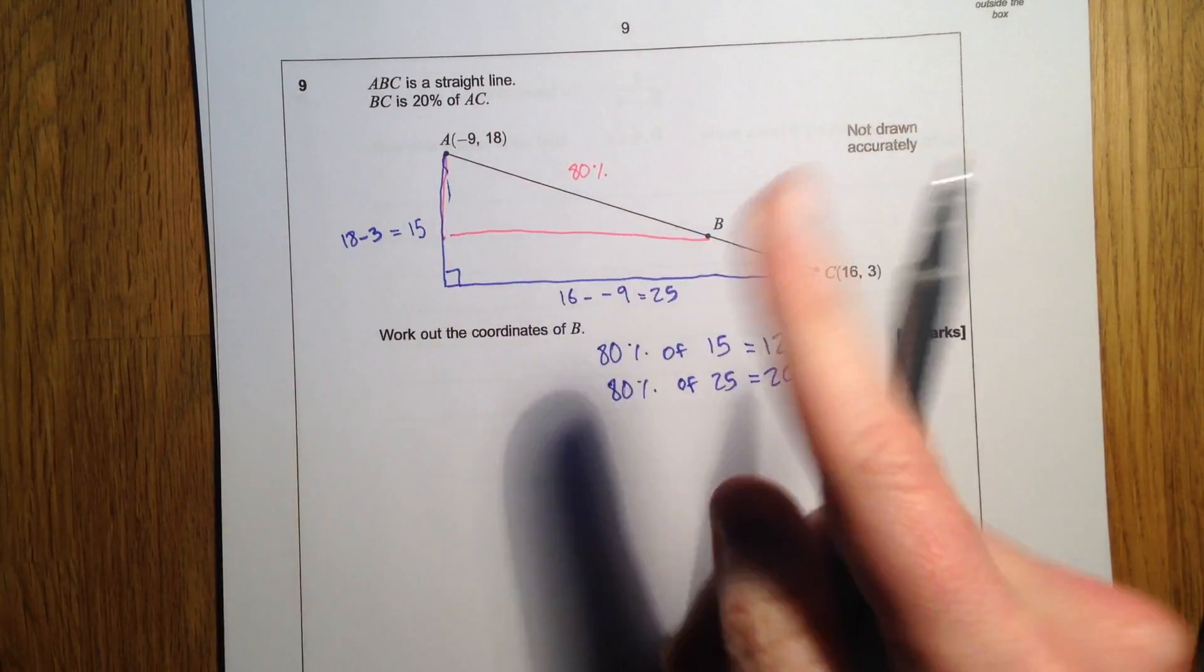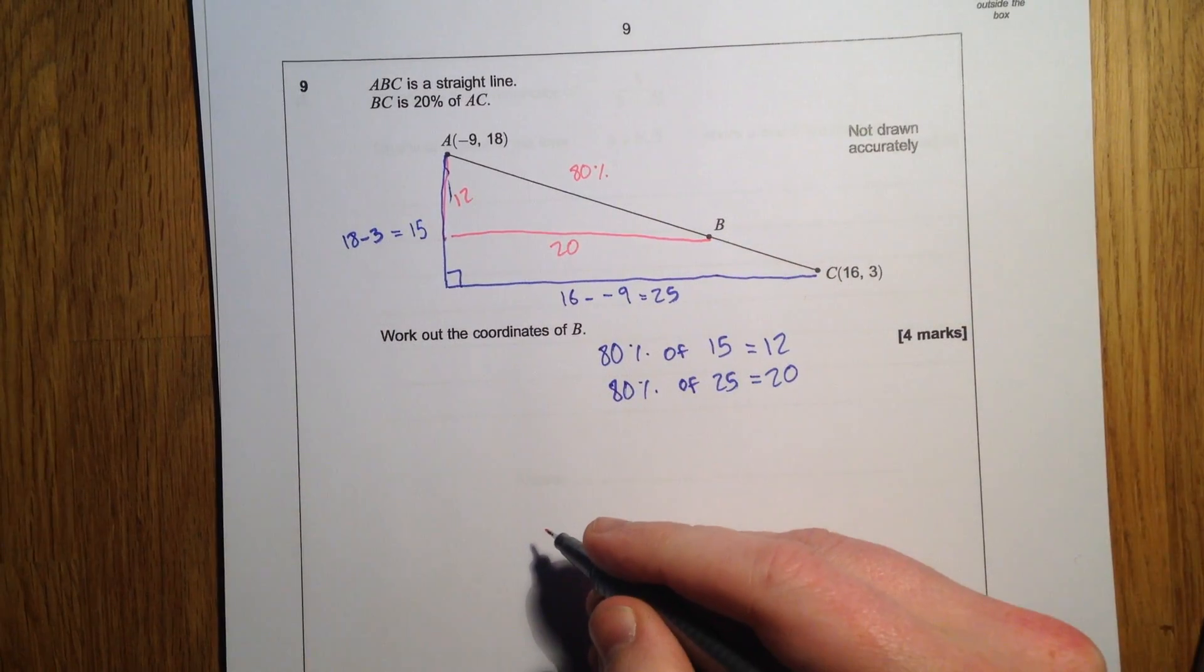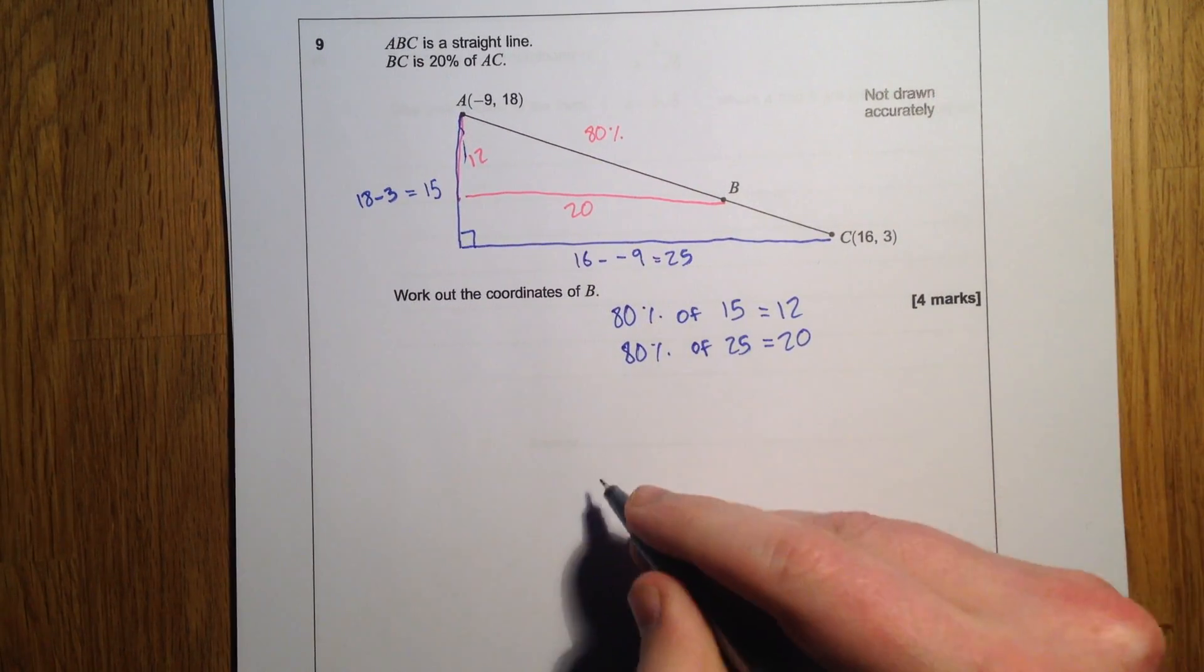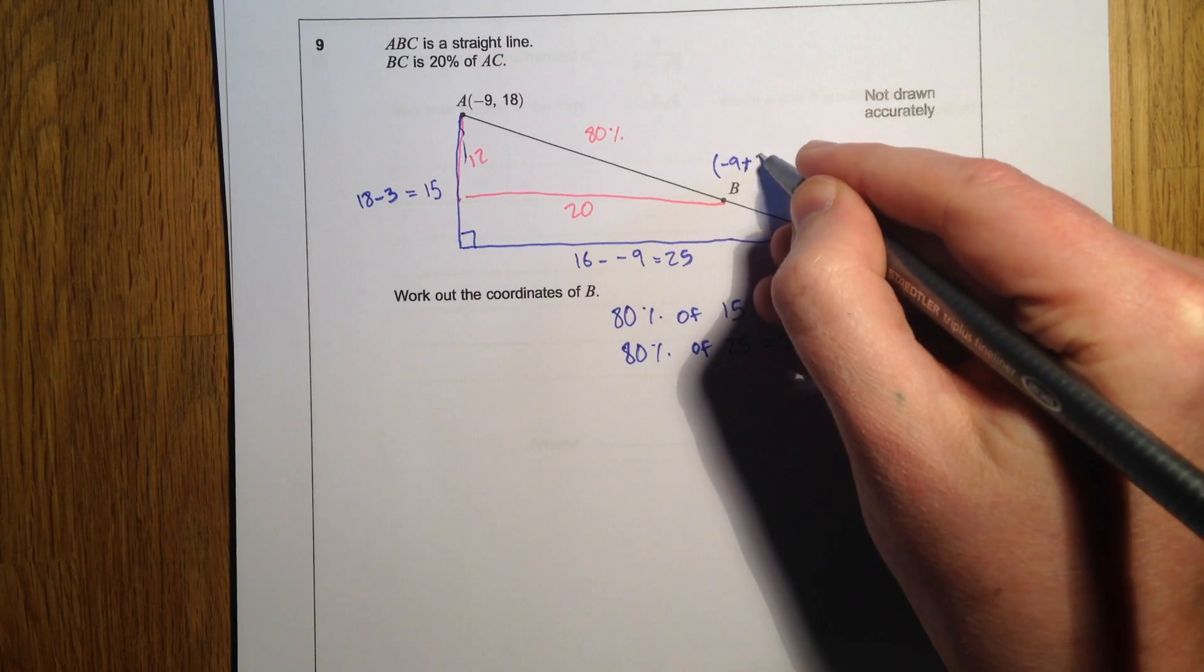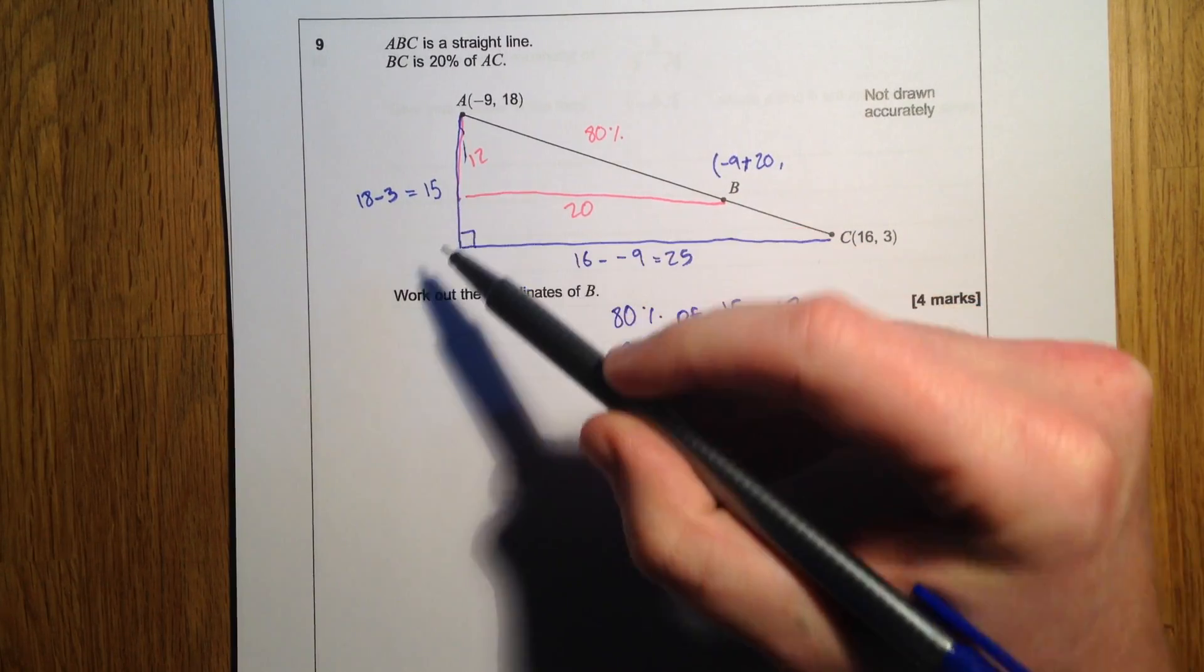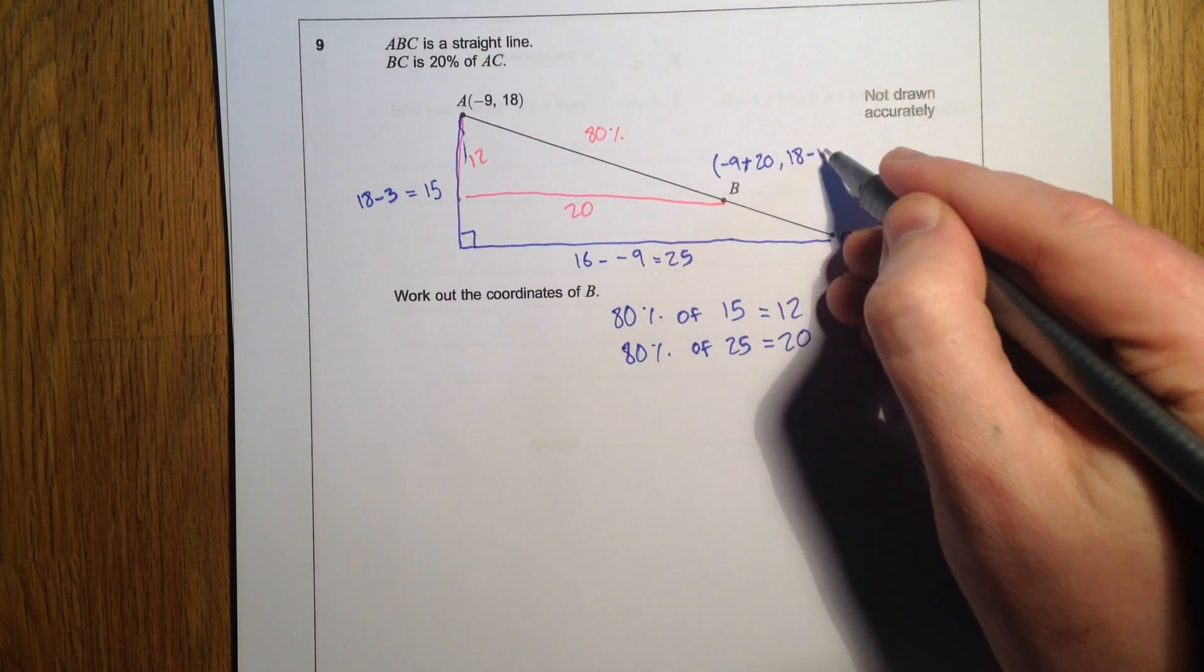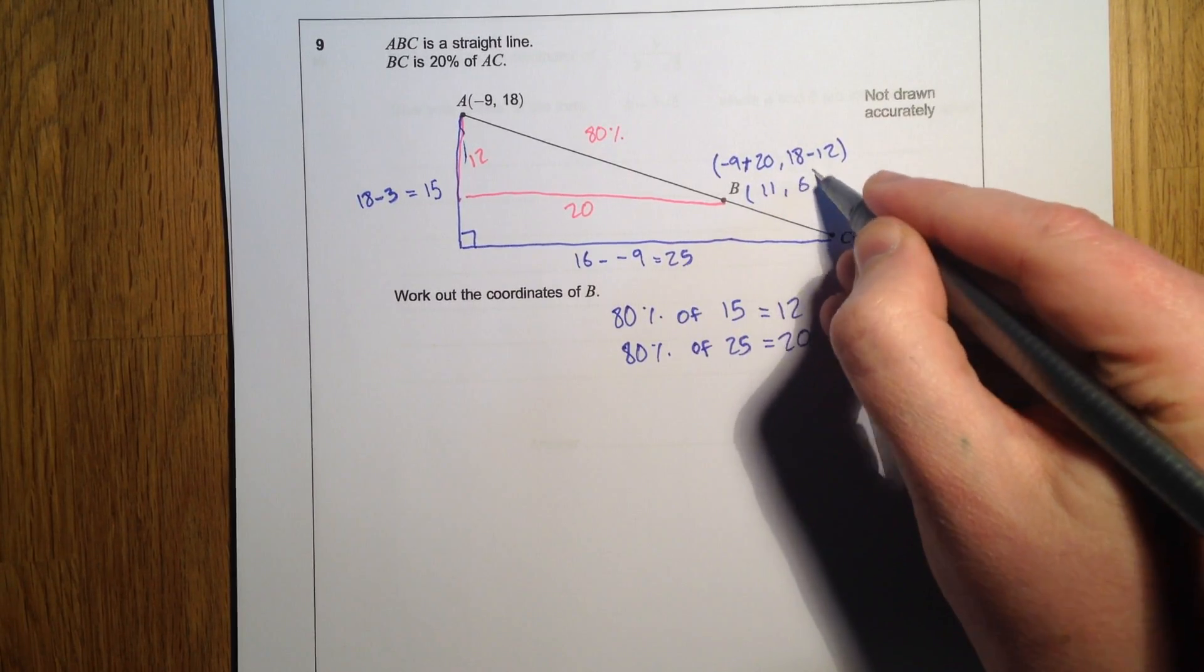So this bit here is 12, so we want to go 20 to the right of negative 9, so it is going to be negative 9 plus 20 for the x-coordinate, and the y-coordinate is going to be 12 down from this 18, so it is going to be 12, so the x-coordinate is 11, 6.